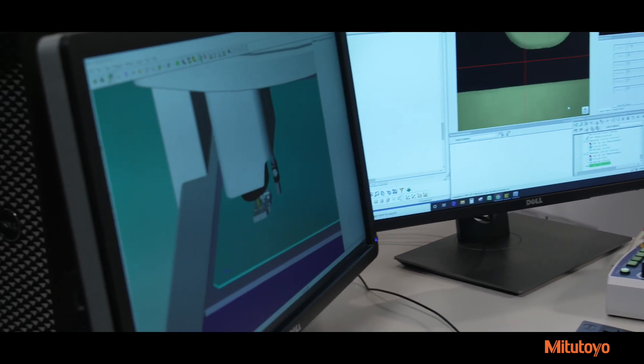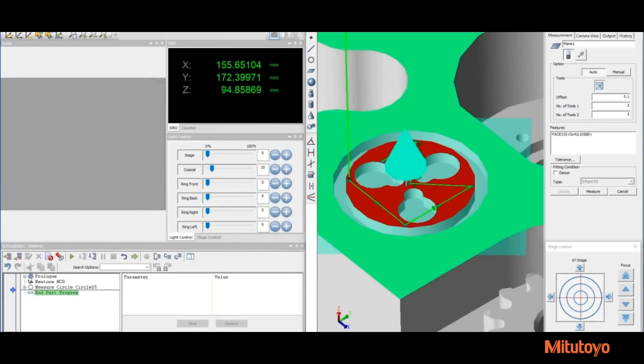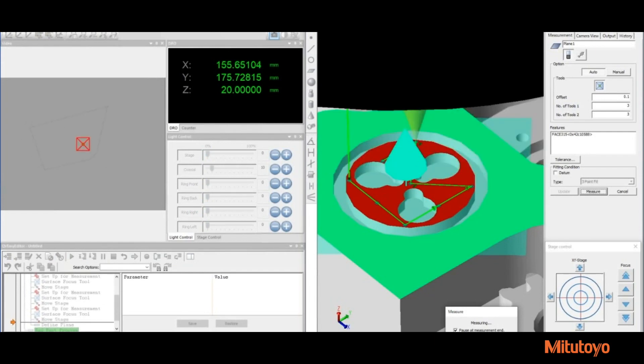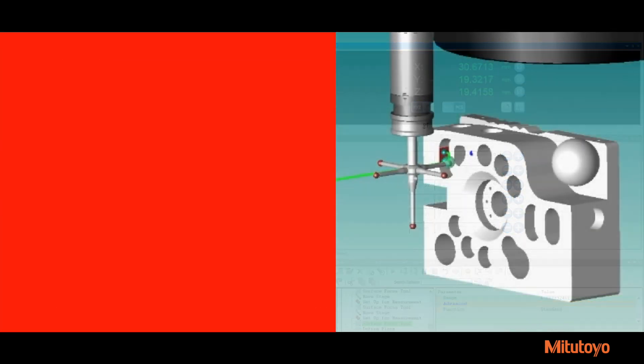In addition to automatic lighting tools, automatic focus tools can be inserted into the QVPAC program before taking measurements of features. QV3D CAD automatically places autofocus tools at optimal surface locations when measuring surfaces. The number of autofocus tools used is easily configured in QV3D CAD.